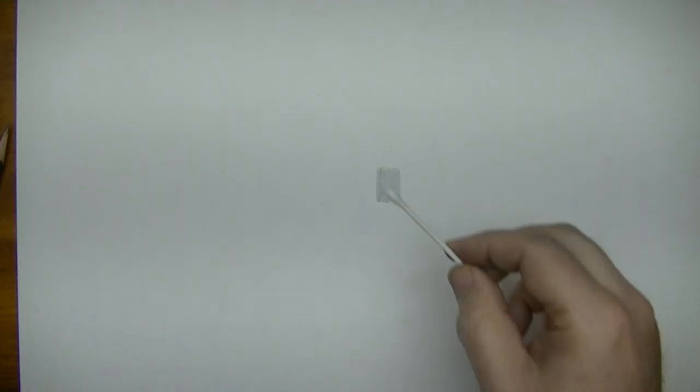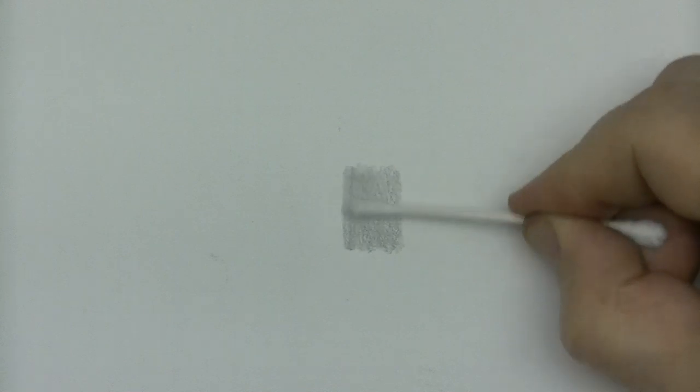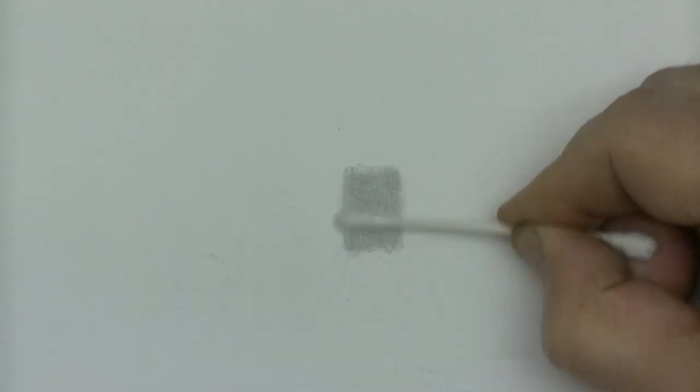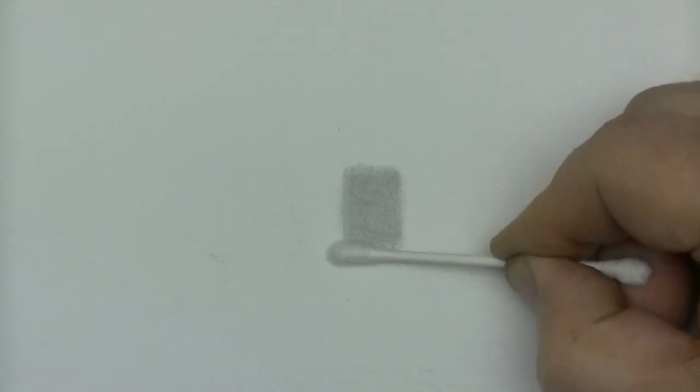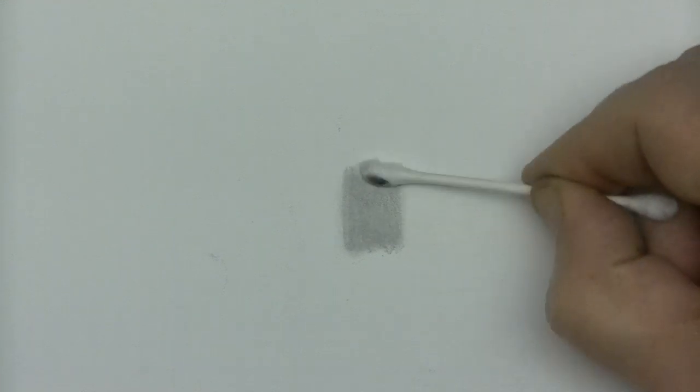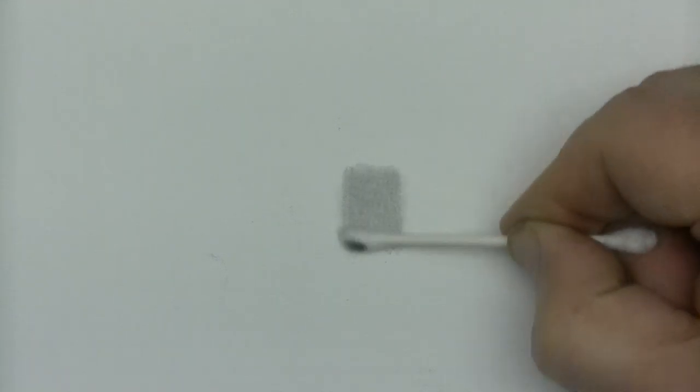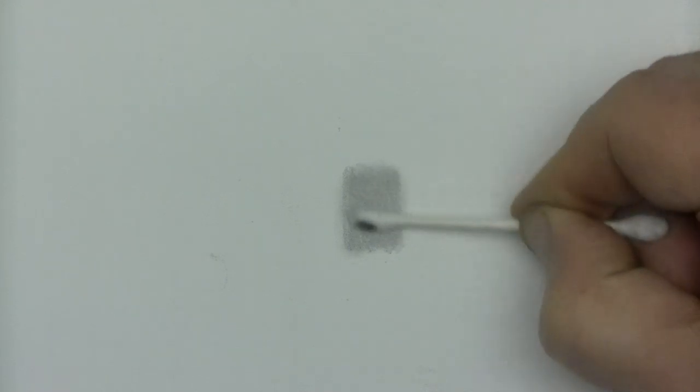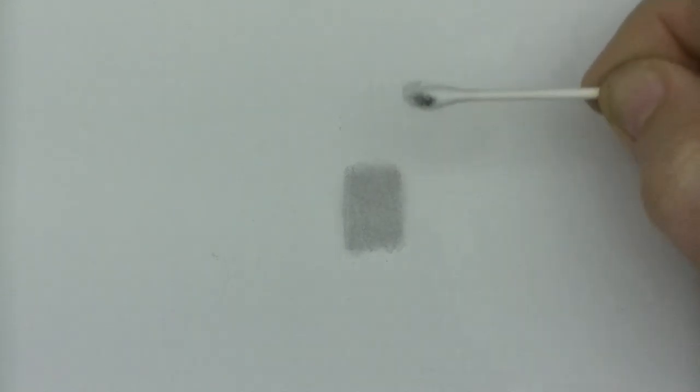Now, what I'm going to do is I'm going to just take my little cotton swab here. Let me zoom in for you a little bit. I'm going to take my cotton swab, and I'm just going to blend this really nice, because that's what I would do when I'm drawing. I like to blend. If you don't, that's fine, don't blend, but I like to blend. So I'm going to get that all in there.